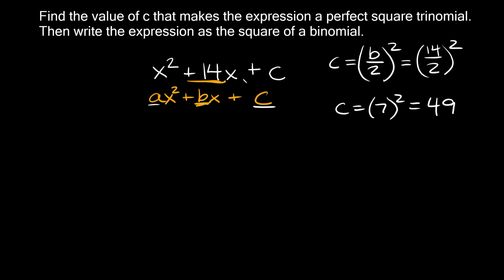So to make this a perfect square trinomial the answer would be x squared plus 14x plus 49. But we can actually condense this a little bit, and that's why this second set of instructions is here. It says then write the expression as the square of a binomial, or basically just write this as a binomial squared.